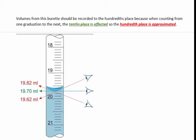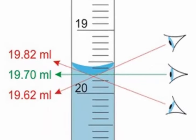Volumes from this burette should be recorded to the hundredths place, because when counting from one graduation to the next, the tenths place is affected. So the hundredths place is approximated.